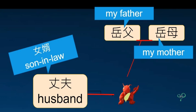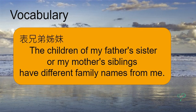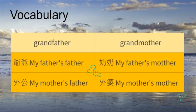Let's review today's vocabulary. 兄弟姐妹 means siblings. 堂兄弟姐妹 are the children of my father's brothers, who have the same family name as me. 表兄弟姐妹 are the children of my father's sister or my mother's siblings, who have different family names from me. Grandfather: 爺爺 is my father's father; 外公 is my mother's father. Grandmother: 奶奶 is my father's mother; 外婆 is my mother's mother.